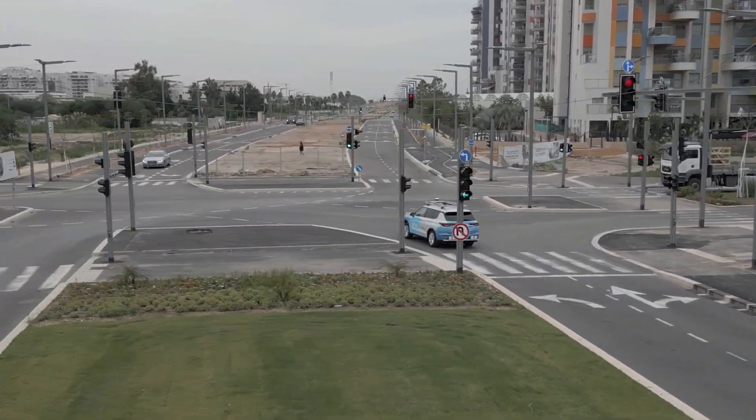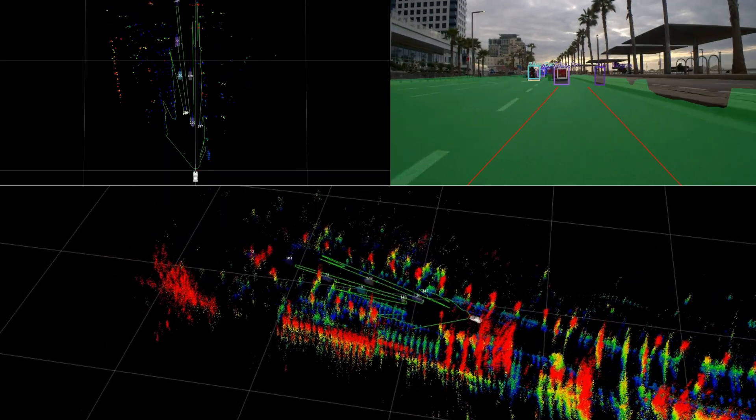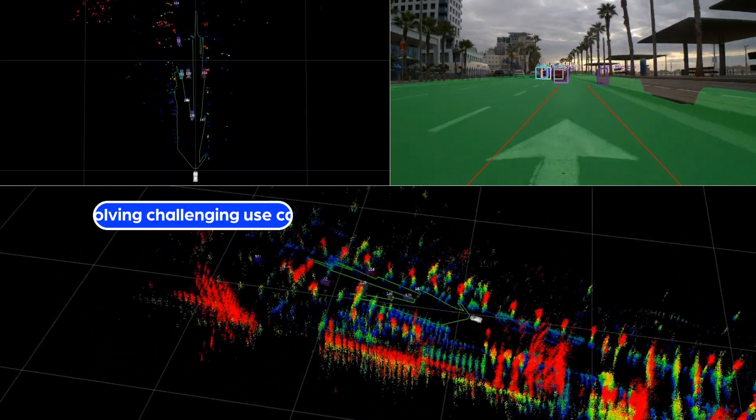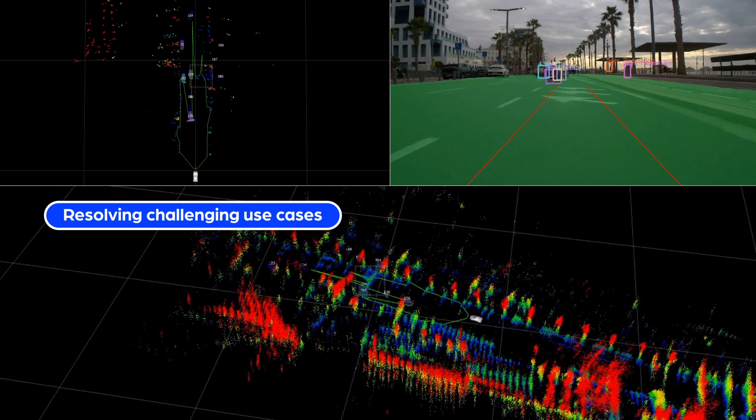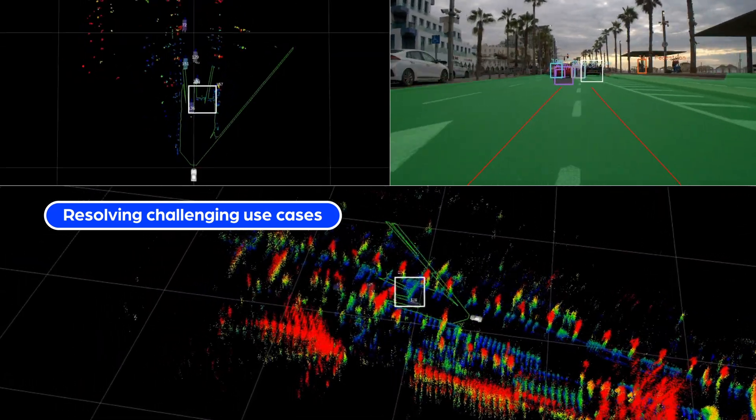The highly dense point cloud delivers performance designed for L2 plus and L3 driving systems, resolving challenging use cases like lost cargo on the highway or a parked car under a bridge.